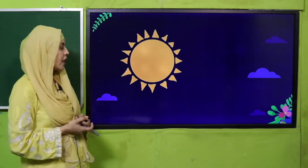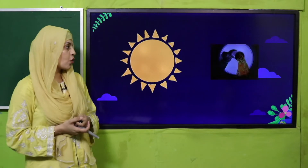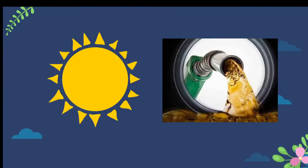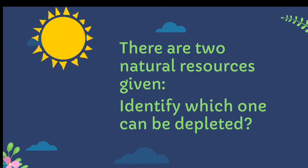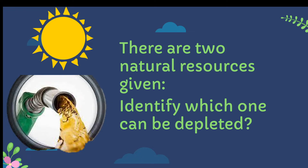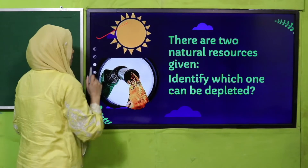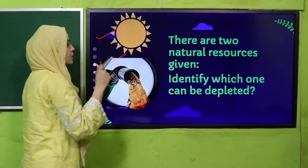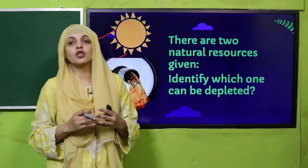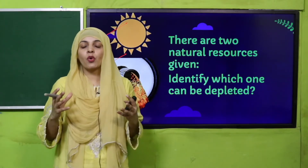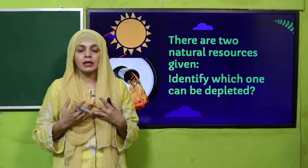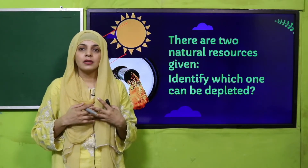Very good. Now let's move forward towards an activity. Here you can see a picture on your screen — this is the sun and that is petrol. So quickly tell me: there are two natural resources given. Identify which one can be depleted. Sunlight is a natural resource, whereas petrol is also a natural resource. In mein se kaun sa aisa resource hai jo deplete ho sakta hai? Deplete ka matlab hai jo use up hone ke baad aap usko dobarah istamal nahi kar sakte. Is it sunlight or is it petrol?